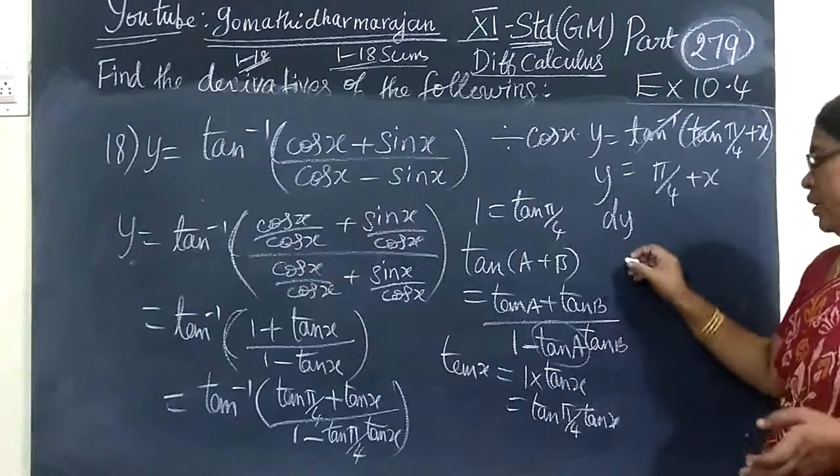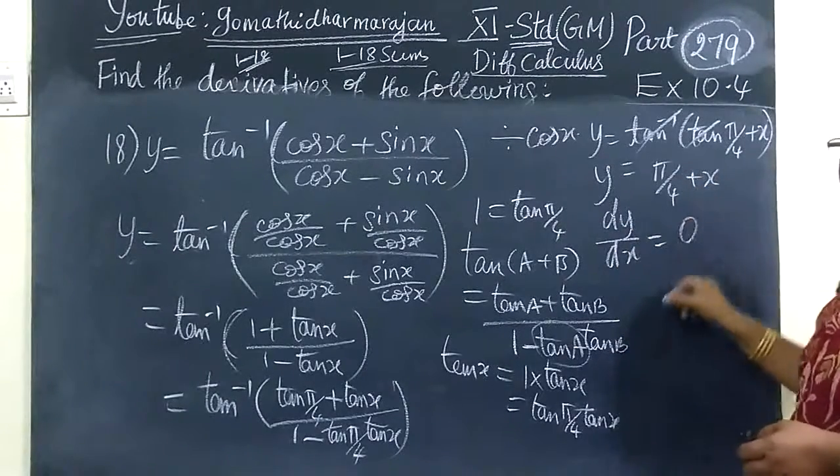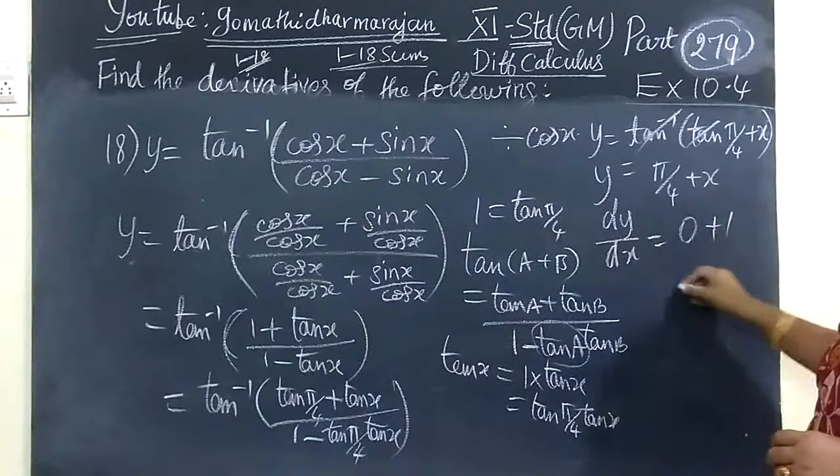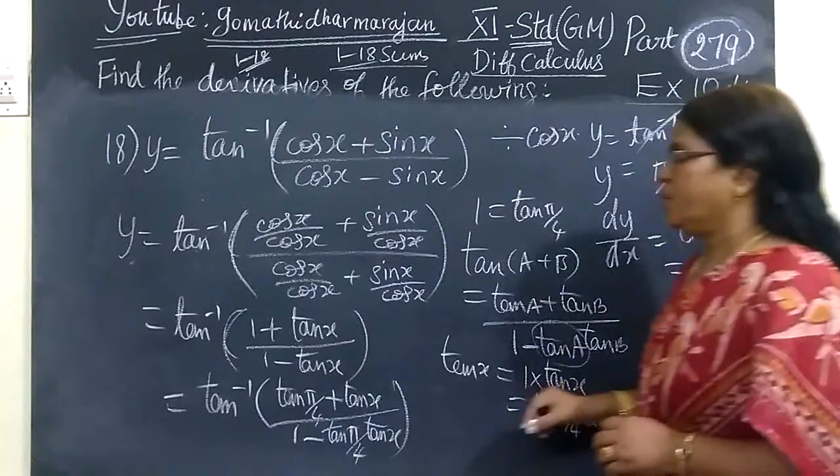We are getting dy by dx is equal to, this becomes 0. Tan, differentiation of constant, 0. That's all, differentiation, 1. So the answer for the 1. This is very simple, yeah?